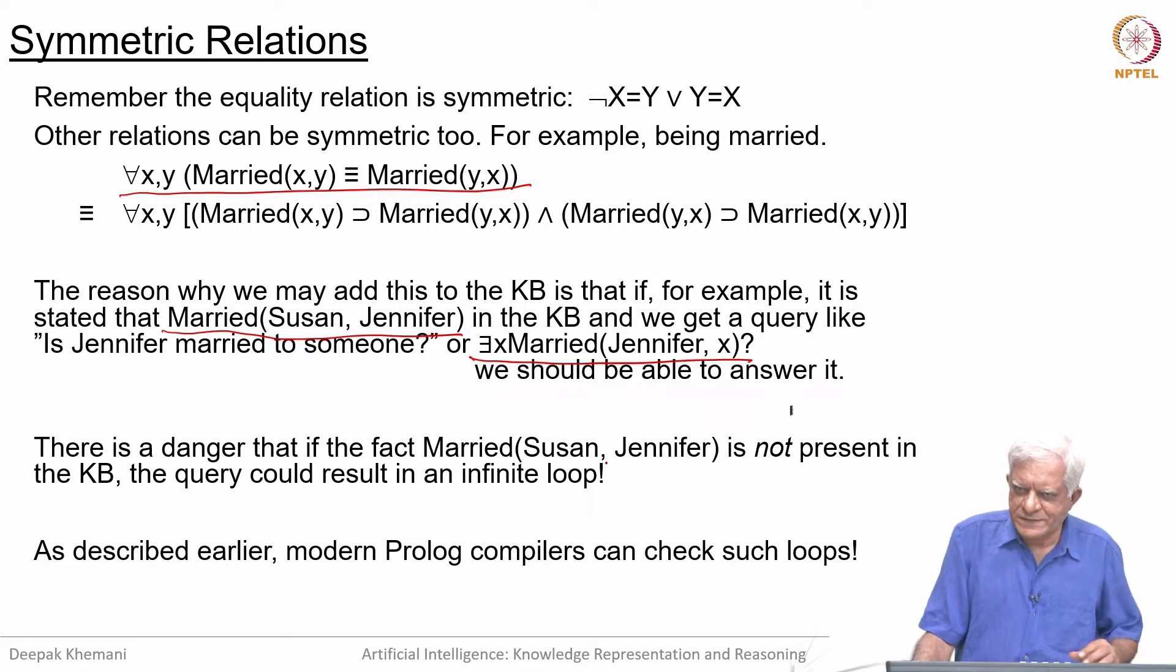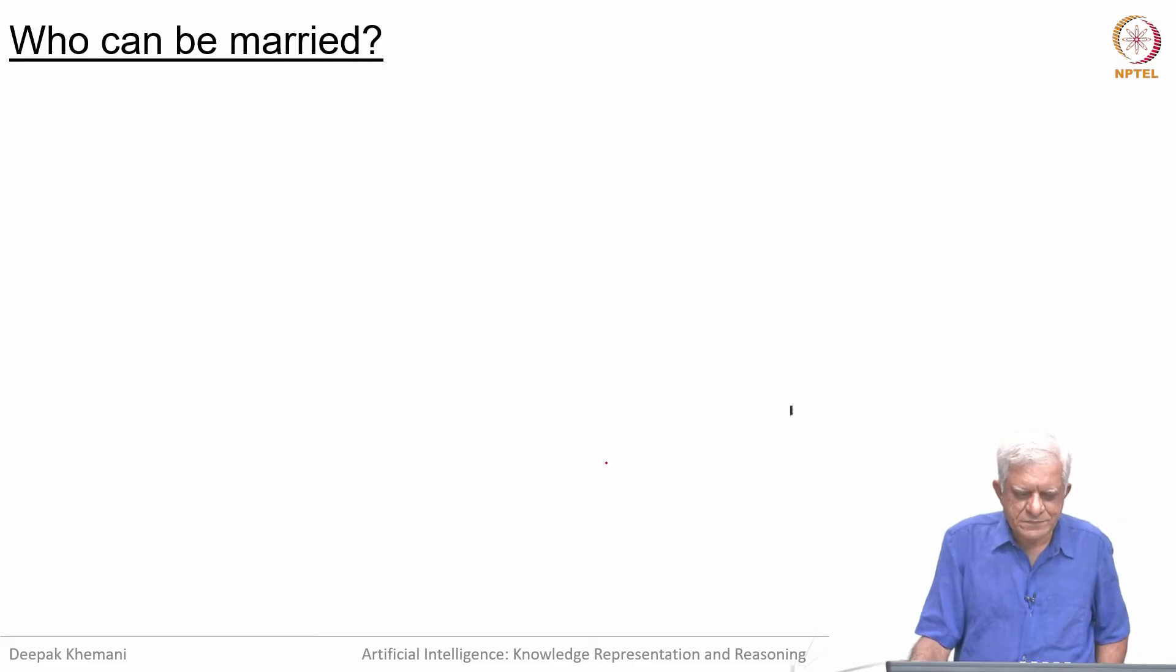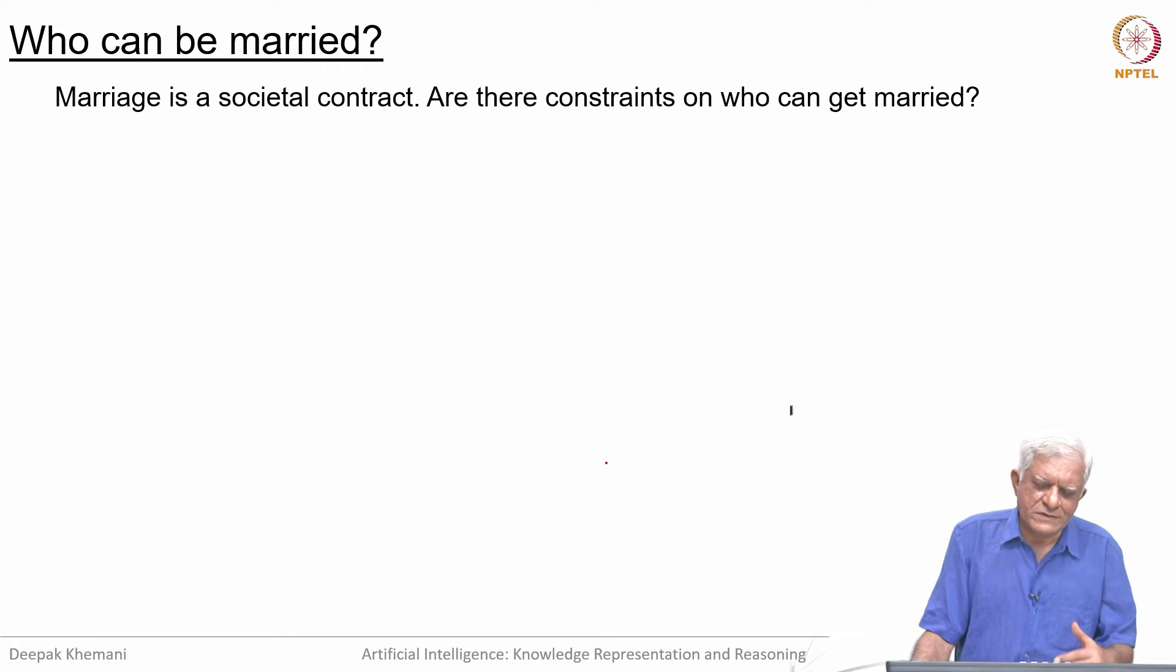Now, we are talking about marriage, so we want to represent knowledge about what it means to be married—not in terms of experience, but in terms of the relations. For example, who can marry whom? Many societies put all kinds of restrictions on that. Let us address how we would add constraints to our notion of who can be married to whom. Marriage is a social contract, so what constraints can we impose?